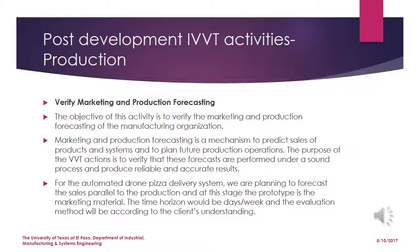The main objective of marketing and production forecasting is to verify the marketing and production forecasting of the manufacturing organization. Marketing and production forecasting is a mechanism to predict sales of products and plan future production operations. The VVT actions verify that these forecasts are performed under a sound process producing reliable and accurate results. For the automated drone pizza delivery system, we plan to forecast sales parallel to production; at this stage the prototype is a marketing material with a time horizon of days per week, evaluated according to the client's understanding.